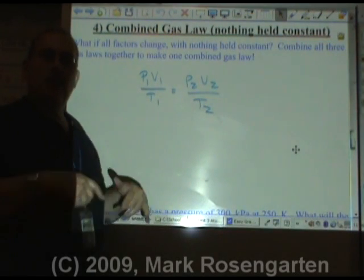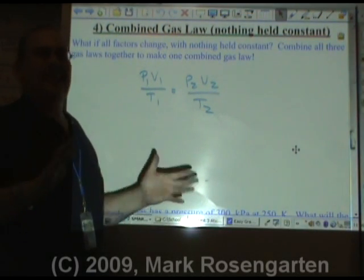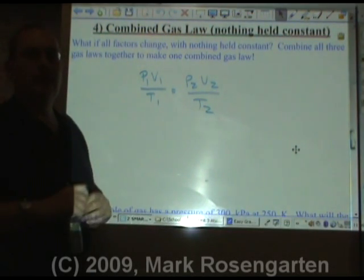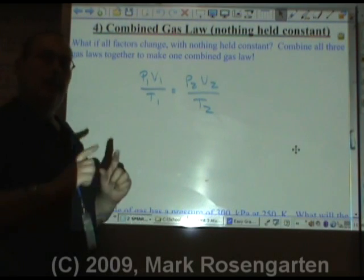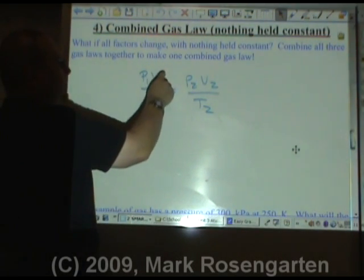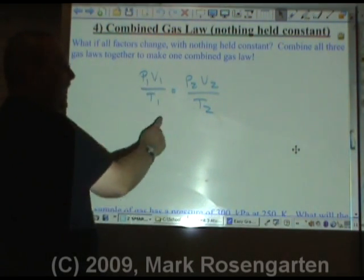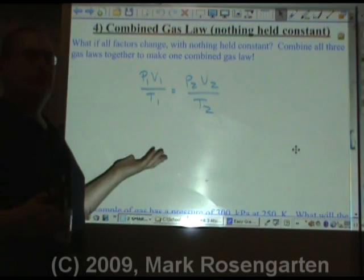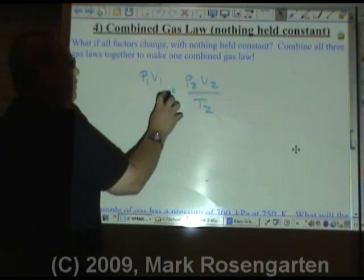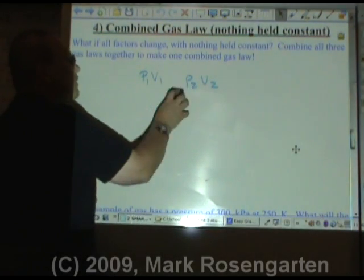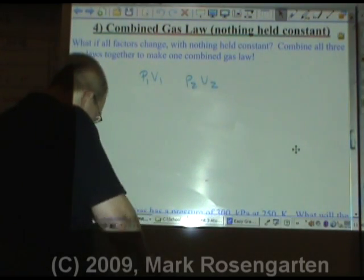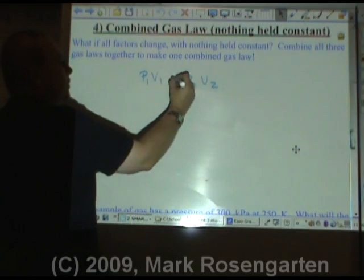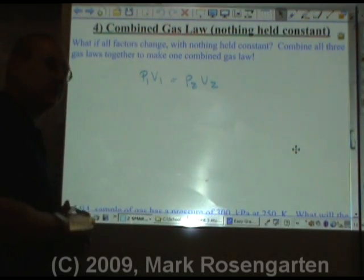With the combined gas law, you can get any of the other gas laws simply by doing this. In Boyle's law, it's pressure versus volume at constant temperature. So if temperature is constant, you don't need it, because it would just simply cancel out and leave you with P1V1 equals P2V2.